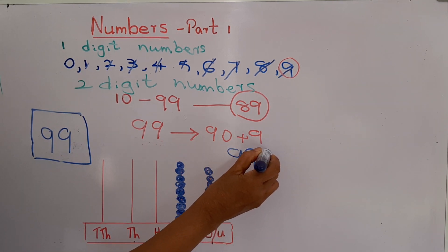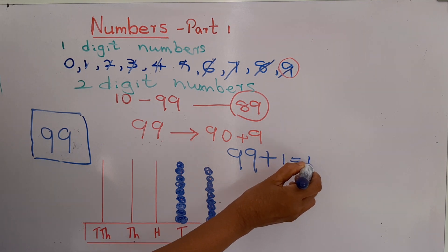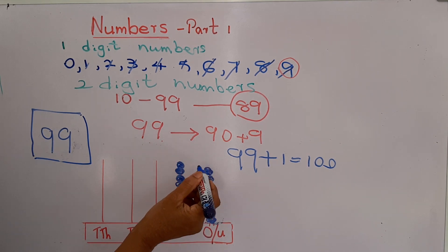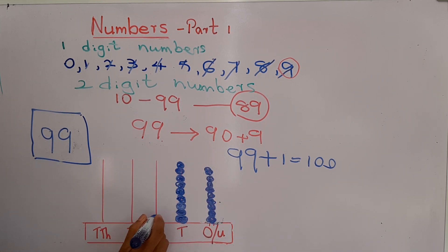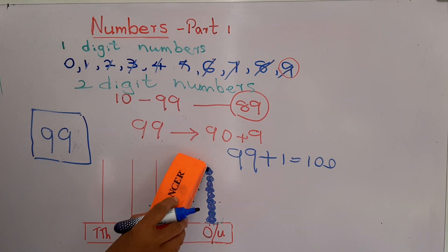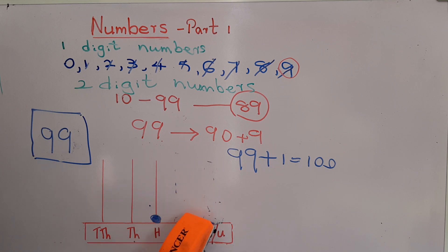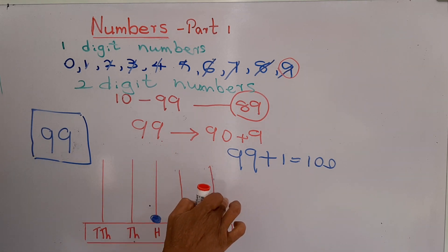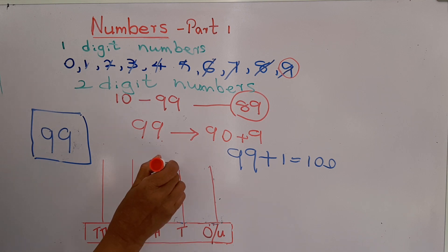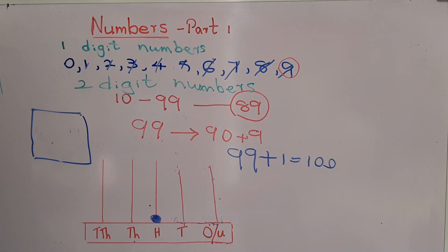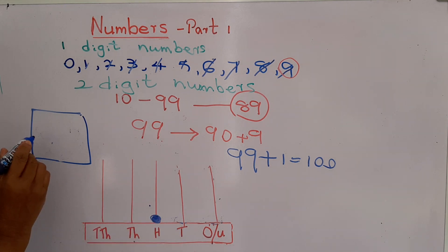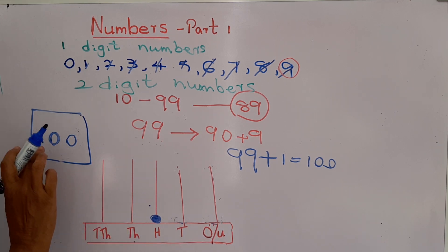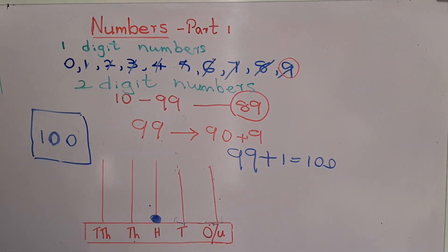We are going to add 1 to number 99. What will the next number be? 100. Shall we add another ring? We can't. If we add another ring, all the values will jump to the hundreds place — that is 100. The tens place becomes 0 and the ones place becomes 0. The abacus now represents 100: 1 hundred, 0 tens, 0 ones.